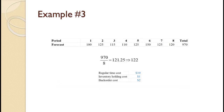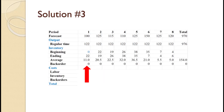For this next example, we will make one minor change to example number 1. We will increase demand in period 1 to 100. Since total demand increases to 970, level production increases to 121.25 per period. Since we cannot produce a partial unit, we will produce 122 per period. For period 1, demand is 100 and production is 122 so inventory goes from 0 to 22 for an average of 11.